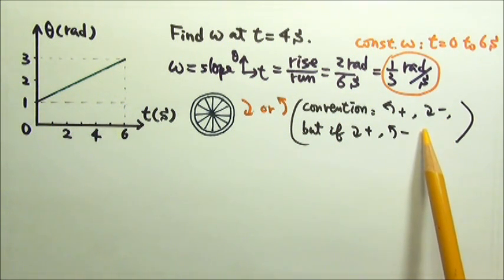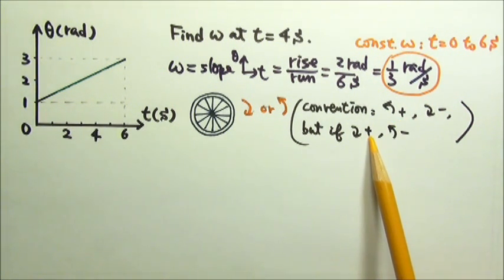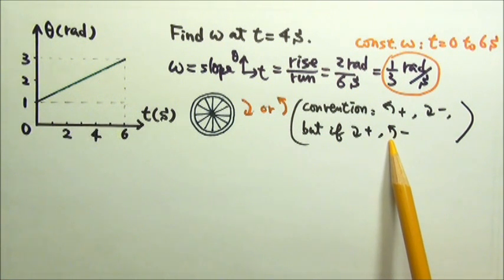However, just like any coordinate system, we can choose either of these as positive, and then, of course, the other direction will be negative.